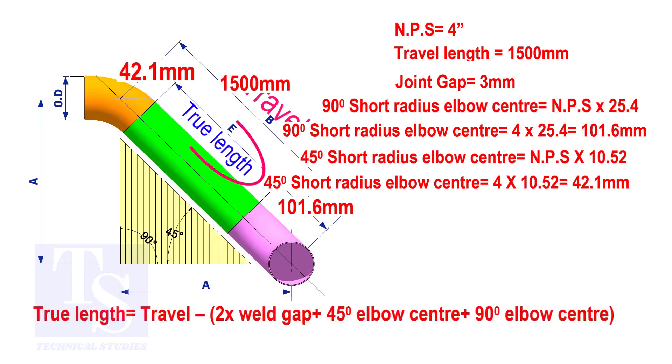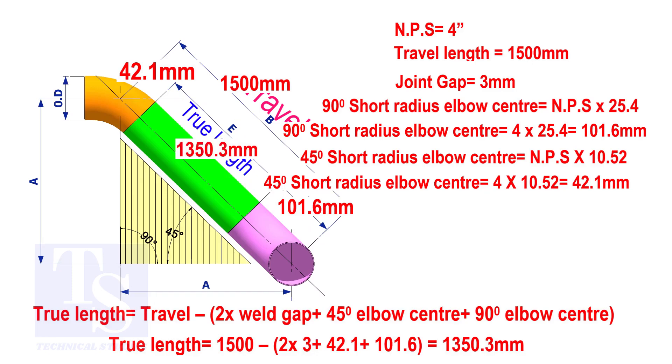To calculate the true length of the pipe, subtract two weld gaps plus both elbow centers from the travel length. The true length of the pipe is 1350.3 millimeters.